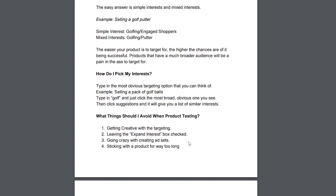Another thing is going crazy with making ad sets. Everybody has a product where they know it's going to be a banger — they have that gut feeling. But that doesn't mean you should stray from the process. Creating seven or maybe ten ad sets depending on your budget is fine, but don't make 30 of them. Don't let your emotions get in the way. If you jerk the algorithm and just throw a bunch of stuff at it, it won't create consistency long term. I just had a store where we created five ad sets on its first day and it did a thousand in sales in three days — we didn't go crazy, we created five, put it out, and went from there.